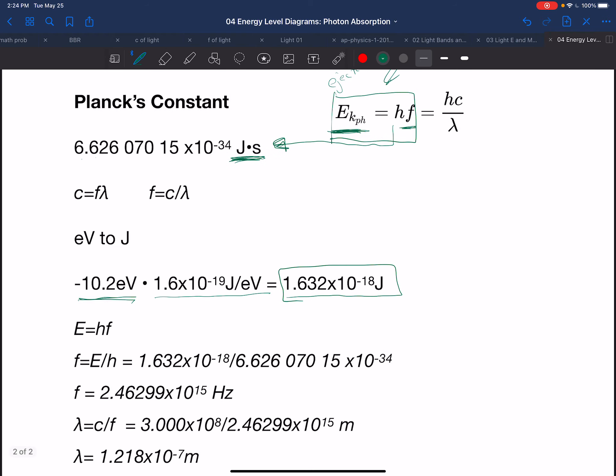Plugging that into the equation now, or plugging it into this E equals hf formula, if we know the energy and we know Planck's constant, allows us to find the frequency. So frequency is energy over Planck's constant, which works out to be 2.46 times 10 to the 15th hertz.